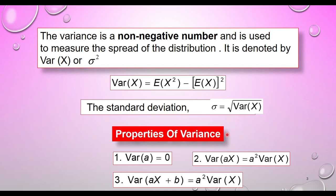Properties of variance: Number one, variance for any constant a is equal to zero. Number two, the variance for aX is equal to a squared times Var(X). Number three, variance of aX plus b is equal to a squared multiplied with Var(X). Please take note that you bring out a and you need to square it.